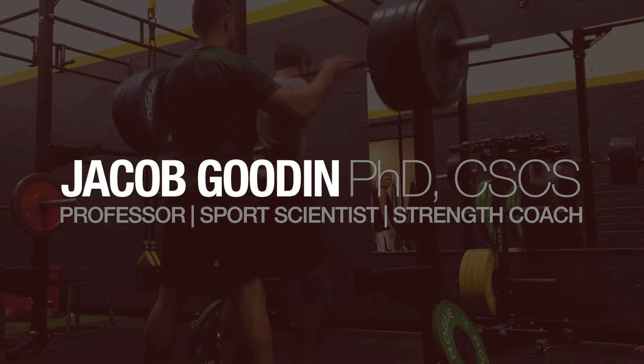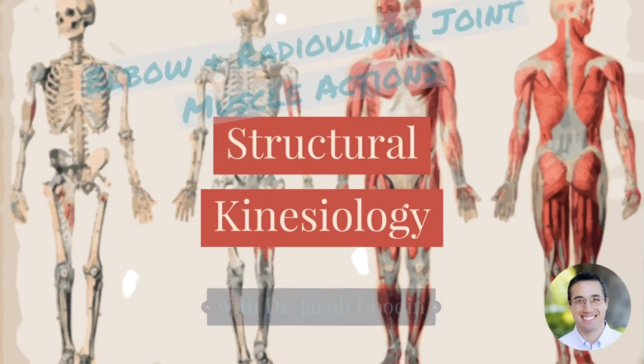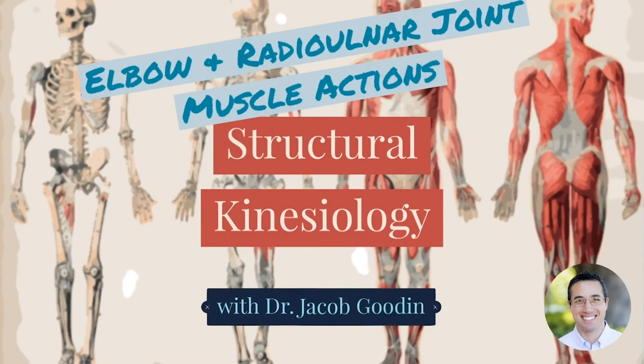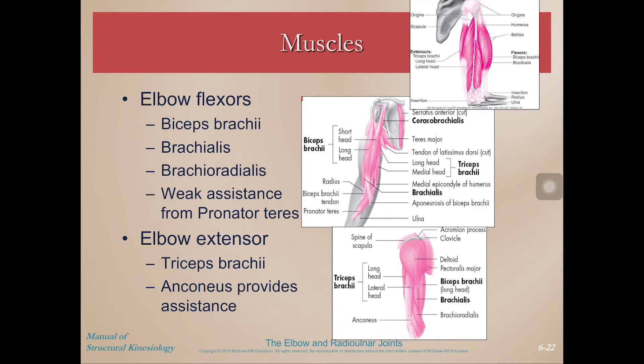It's Dr. Gooden back again with another Structural Kinesiology video, this time talking about the muscle actions of the elbow and radial-ulnar joints. Here we are with muscles of the elbow and radial-ulnar joints. I have them grouped for you in two slides and then we'll look at each muscle individually.